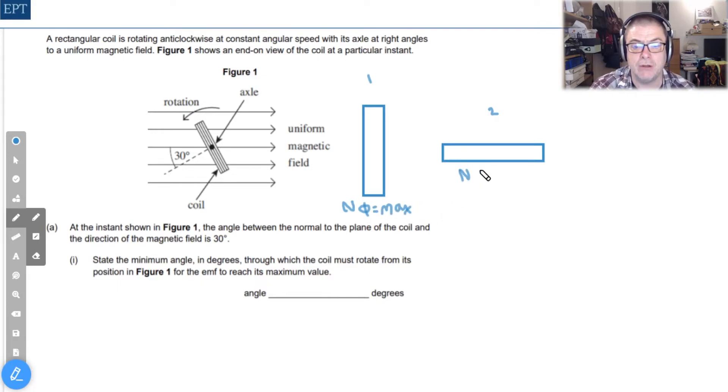In position two though, the flux linkage EMF is actually going to be zero. This is not so tricky to see because in this position the coils are actually running parallel to the magnetic flux lines. So in effect no lines are being cut.